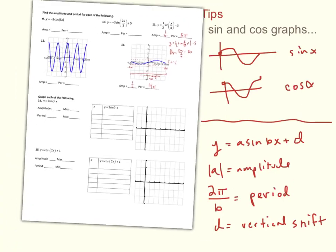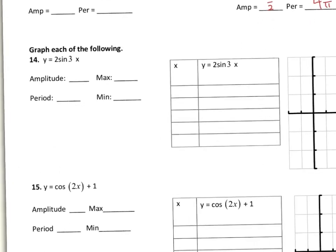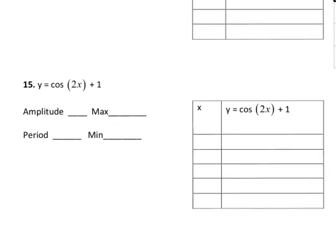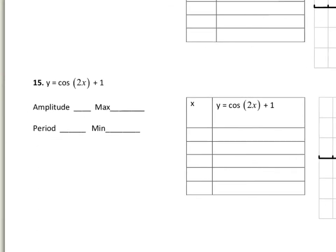For number 15, let's go through how to graph. First, identify the amplitude — there's no coefficient in front of cosine, so the amplitude is 1, meaning the normal max and min would be 1 and −1. However, there's a vertical shift of +1, so shift both values up: max becomes 1 + 1 = 2, and min becomes −1 + 1 = 0. The period is 2π over b; here b = 2, so the period is π.